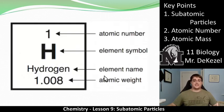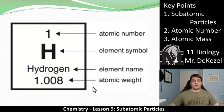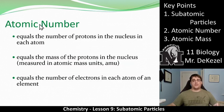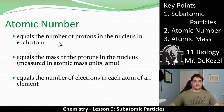It's probably going to look something like this: atomic number up top — number one — element symbol H, element name hydrogen, and atomic weight or atomic mass below. The two key numbers are the atomic number and the atomic weight or atomic mass. The atomic number equals the number of protons in the nucleus of each atom.